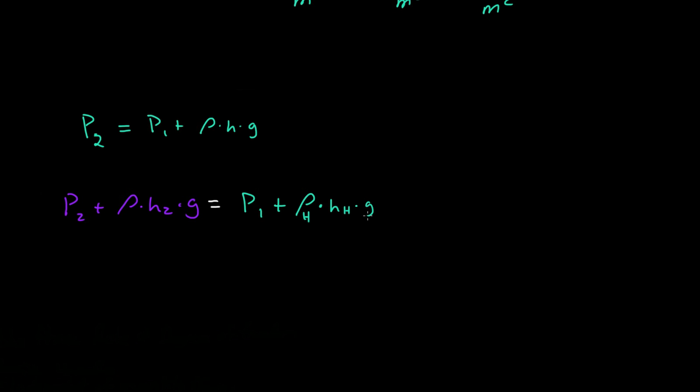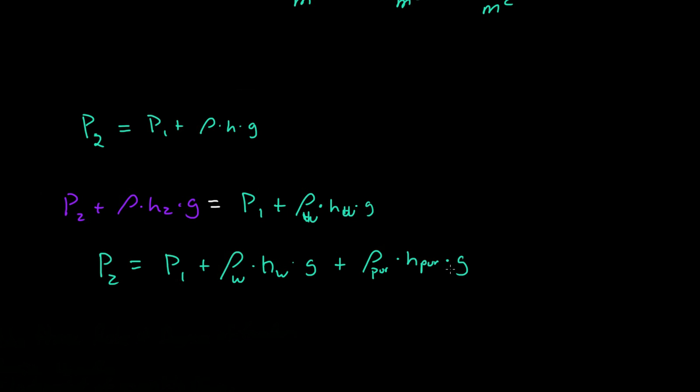So that's how you can find the pressure difference with multiple fluids. If you wanted to define P2, P2 would be equal to P1 plus the density of water times the height of water times g, plus the density of the purple fluid times the height of the purple fluid times the gravitational constant.